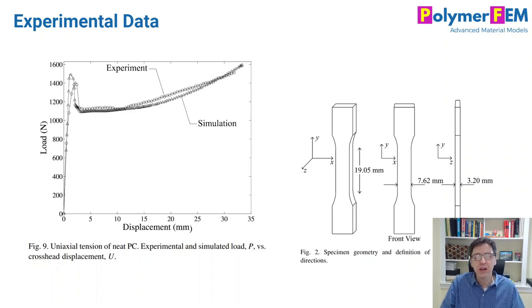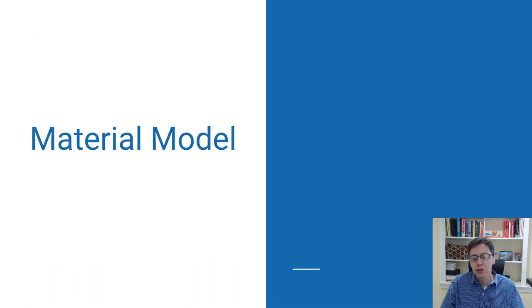That's obviously important and also challenging because then you will have a strain state and stress state inside the gauge section that will be different from different locations. There will be a front of this material that undergoes the transformation from unnecked to ennecked state and that's obviously important to capture. So to simulate this I need a material model.